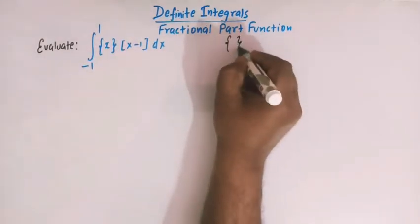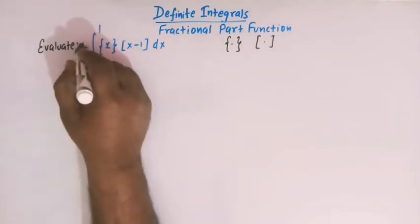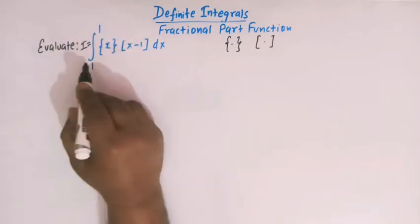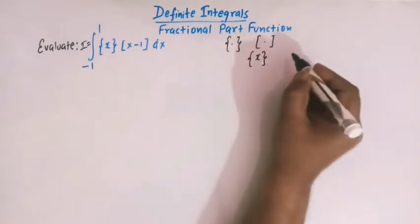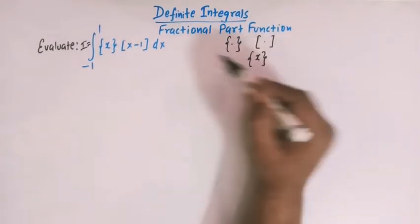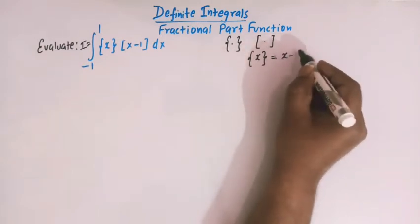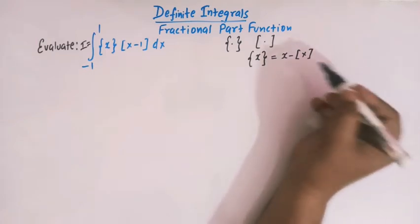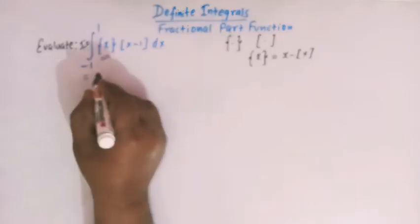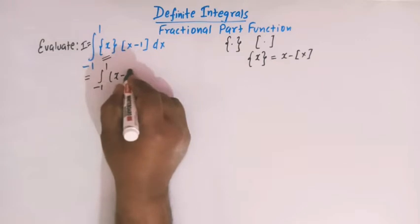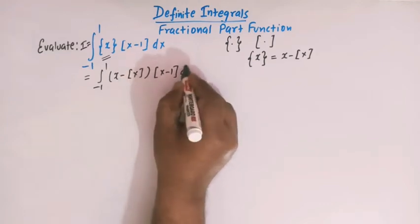This is the fractional part function and this is the greatest integer function. Let us call this integral as I. Now in order to solve this integral, we will take the definition of fractional part function: the fractional part of x is defined by x minus greatest integer of x. So if we substitute this value, we have the integral from minus 1 to 1 of x minus greatest integer of x, times greatest integer of x minus 1, dx.